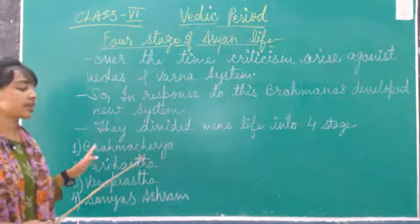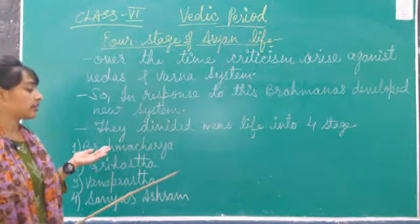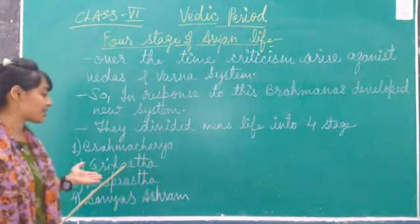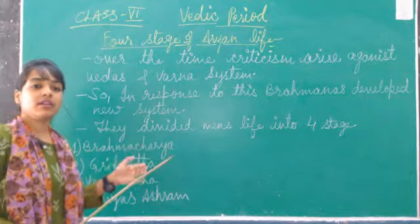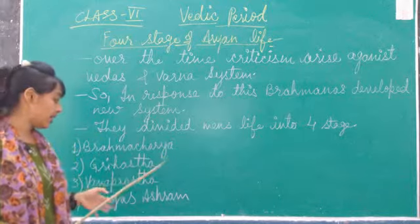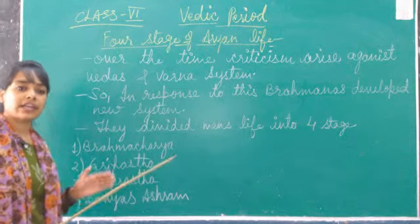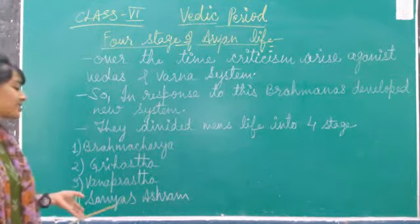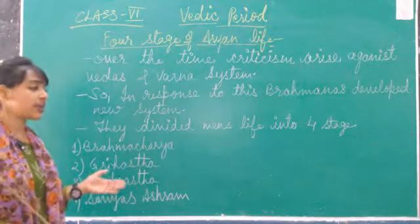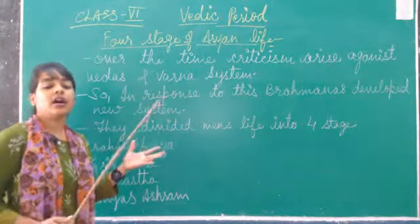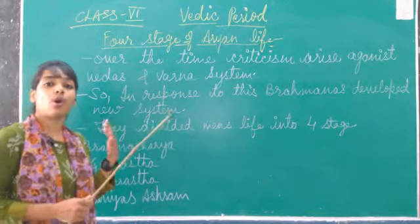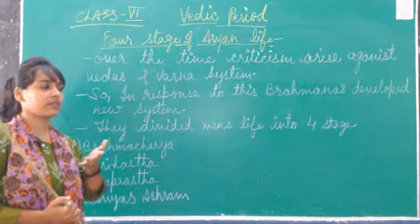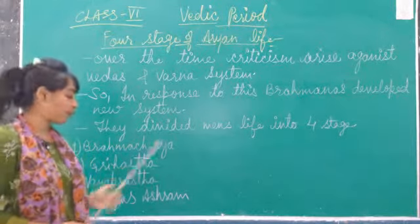So about these 4 stages: Brahmacharya — basically men have to live life away from their parents and family. Then Vanaprastha — they live all the worldly life and go to the forest and do some meditation. And next is the Sanyasashram, the last stage — the 4th. In Sanyas, they take Sanyas and leave all the worldly things, family, and everything, and go for Sanyas.